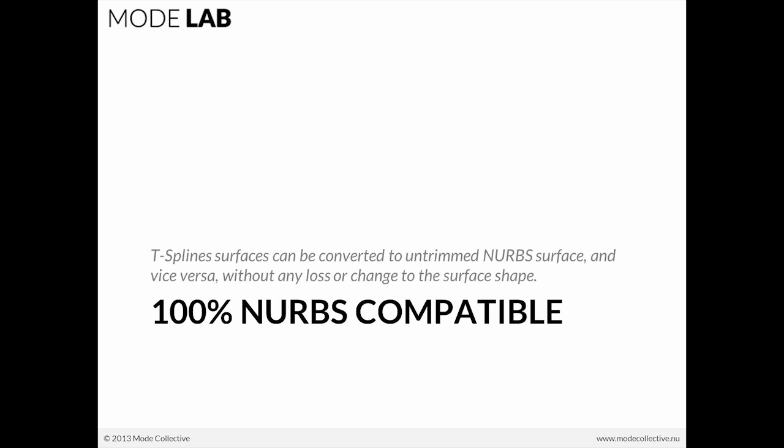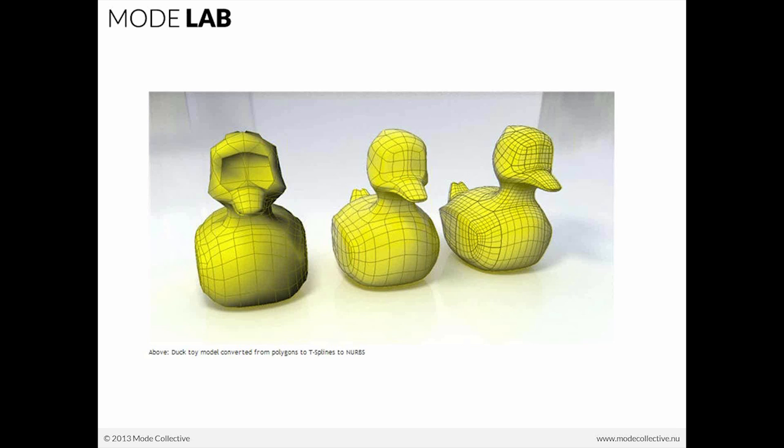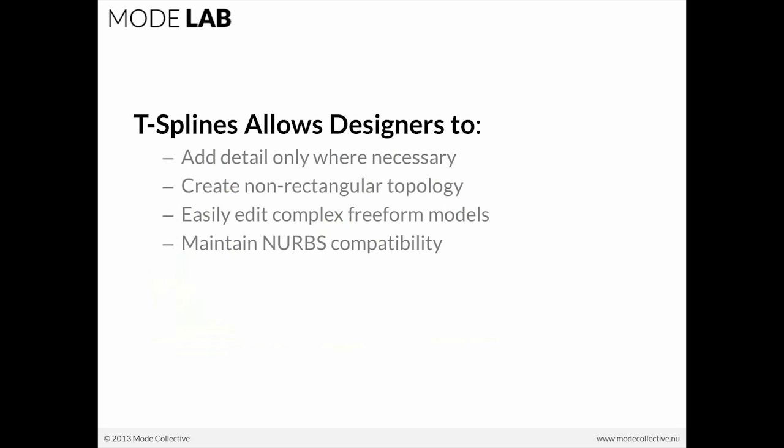Now, lastly, T-Spline surfaces can be converted to untrimmed NURBS surface and vice versa, without any loss or change to the surface shape. There's 100% NURBS compatible. If you take a look up here, we can see that from polygons to T-Splines to NURBS, the geometry remains consistent without deviation. So T-Splines allows designers to add detail only where necessary, create non-rectangular topology, easily edit complex free-form models, and maintain NURBS compatibility.